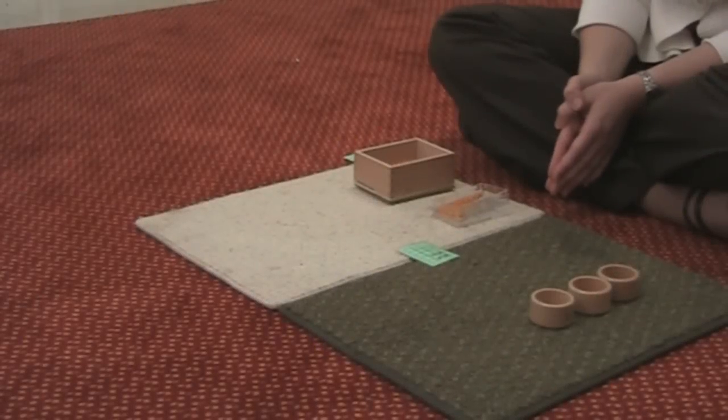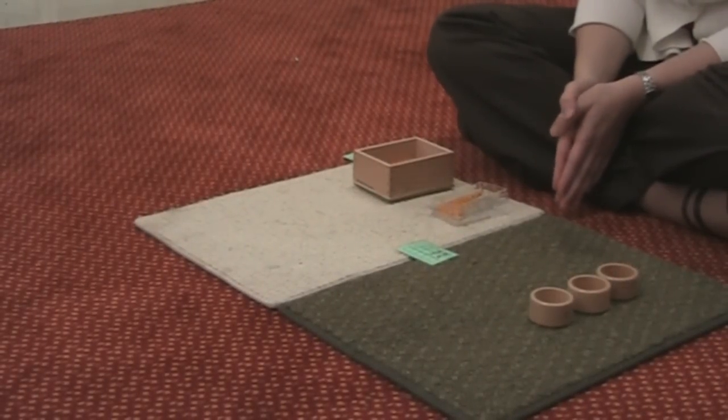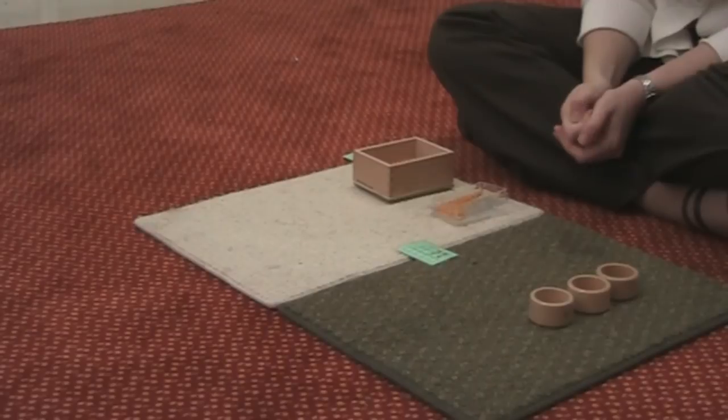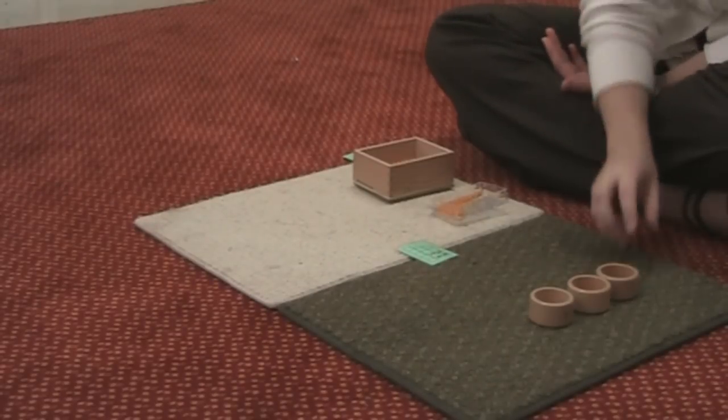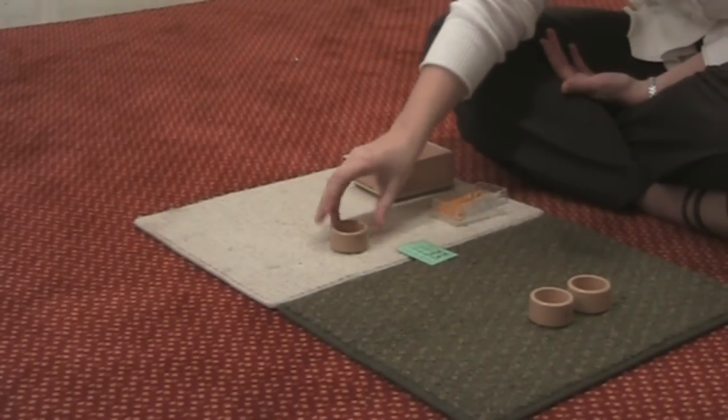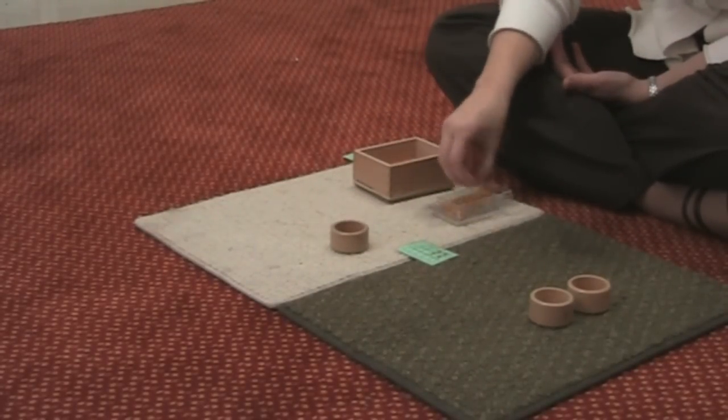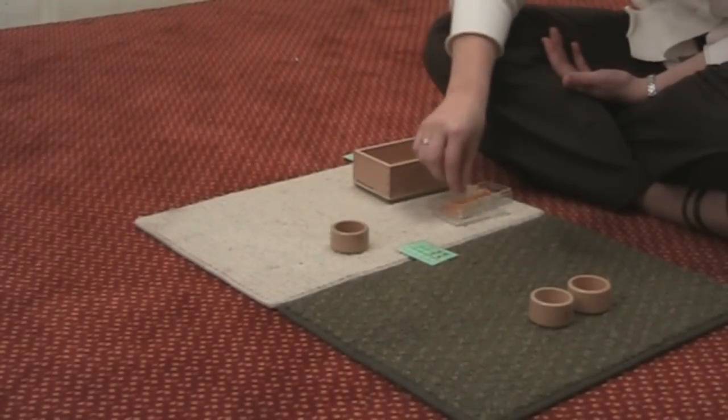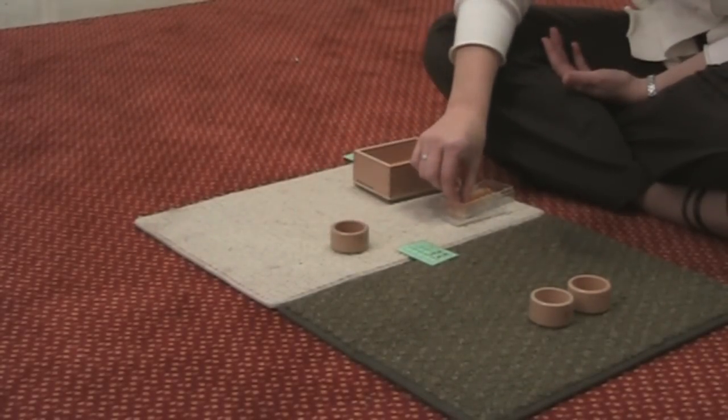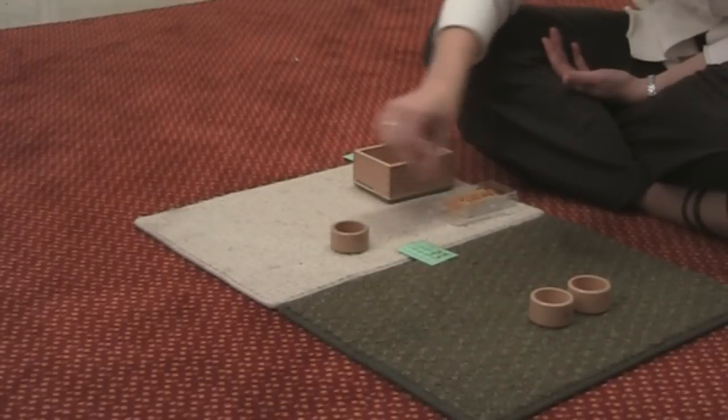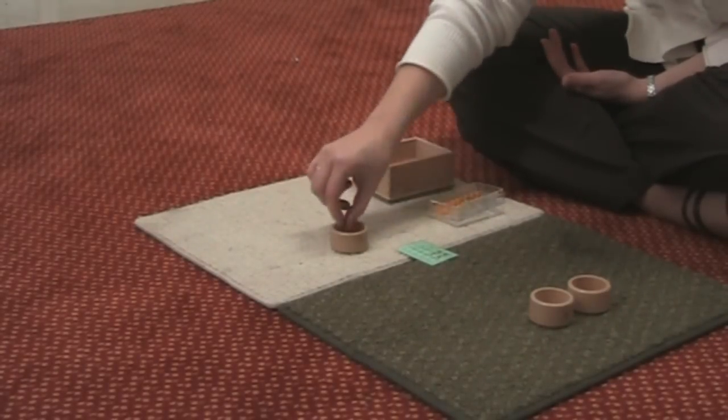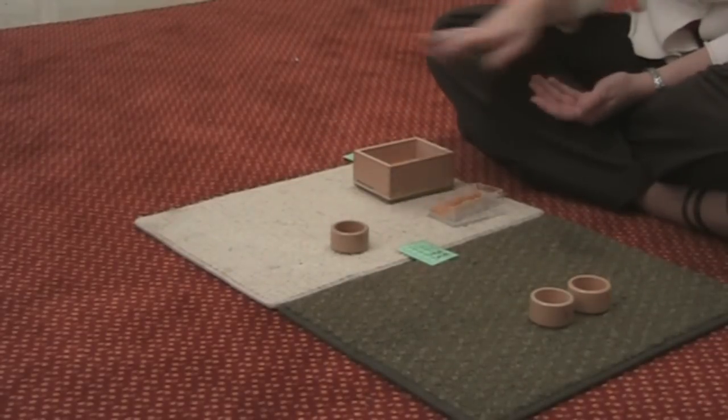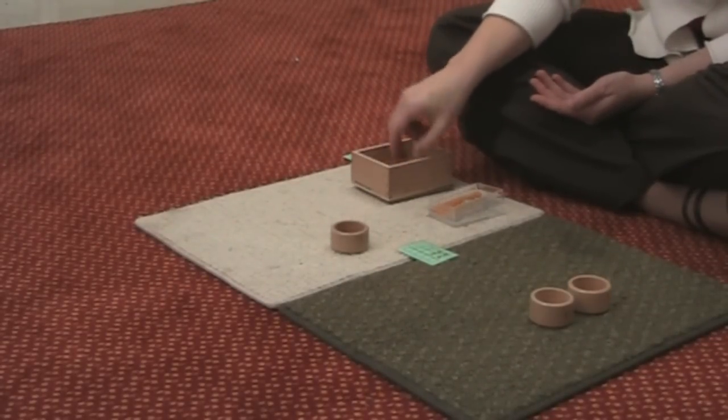Okay, we're going to do a static subtraction with 2 digit numbers. So we have 58 minus 24. We're going to start with our units and count 8 beads into this cup. 1, 2, 3, 4, 5, 6, 7, 8.